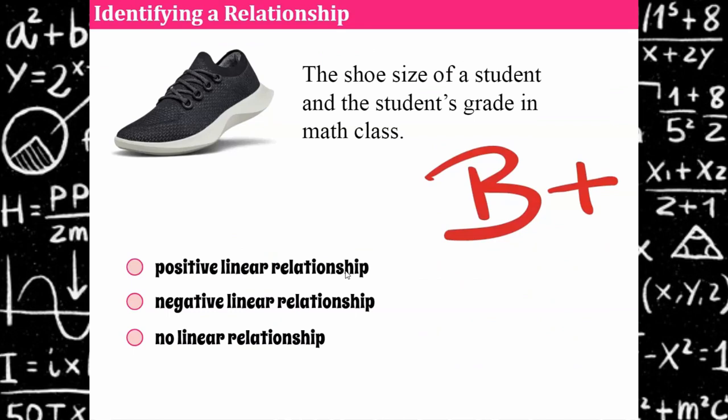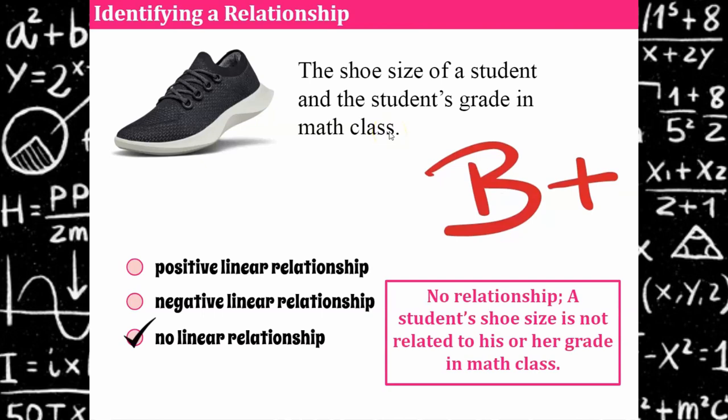Now we're going to talk about some real world without graph without data and what would you conclude? Would there be a positive linear relationship, a negative linear relationship, or no relationship at all? I want you to think about this pause and come back and check when you're ready. The shoe size of a student compared to the student's grade in math class. What kind of relationship would you expect? Welcome back. Hopefully you decided that there was no relationship between the size of someone's shoe and their grade in math class. There is no relationship between that.